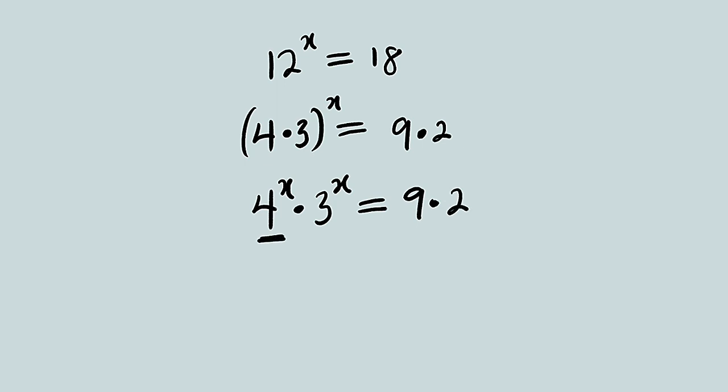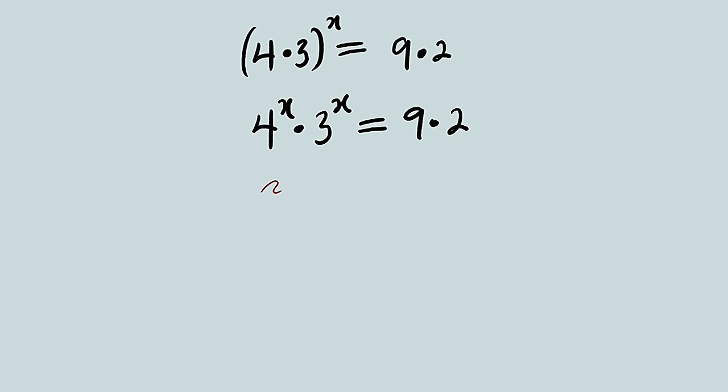4 can be expressed as 2 power 2, and 9 can be expressed as 3 power 2. So on the left hand side we have 2 power 2x multiplied by 3 power x. On the right hand side we have 3 power 2 multiplied by 2.